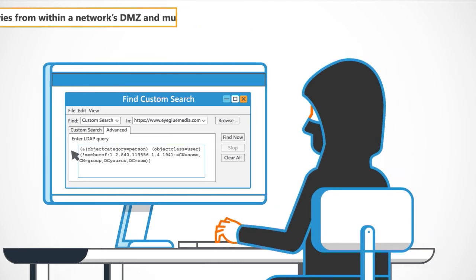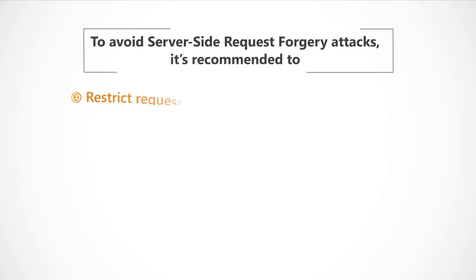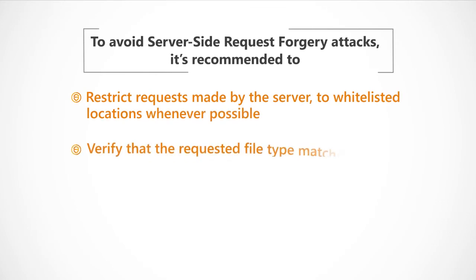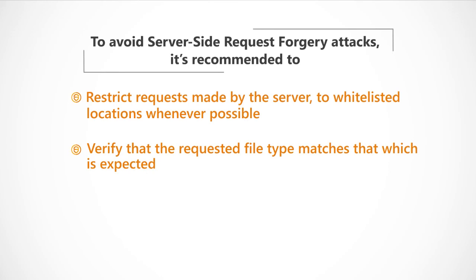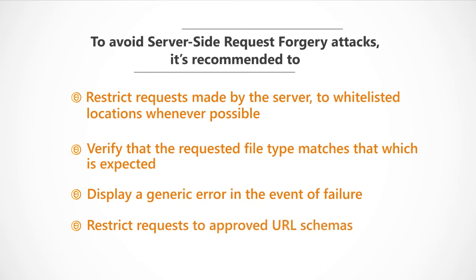To avoid server-side request forgery attacks, it's recommended to: restrict requests made by the server to whitelisted locations whenever possible; verify that the requested file type matches that which is expected; display a generic error in the event of failure; and restrict requests to approved URL schemas.